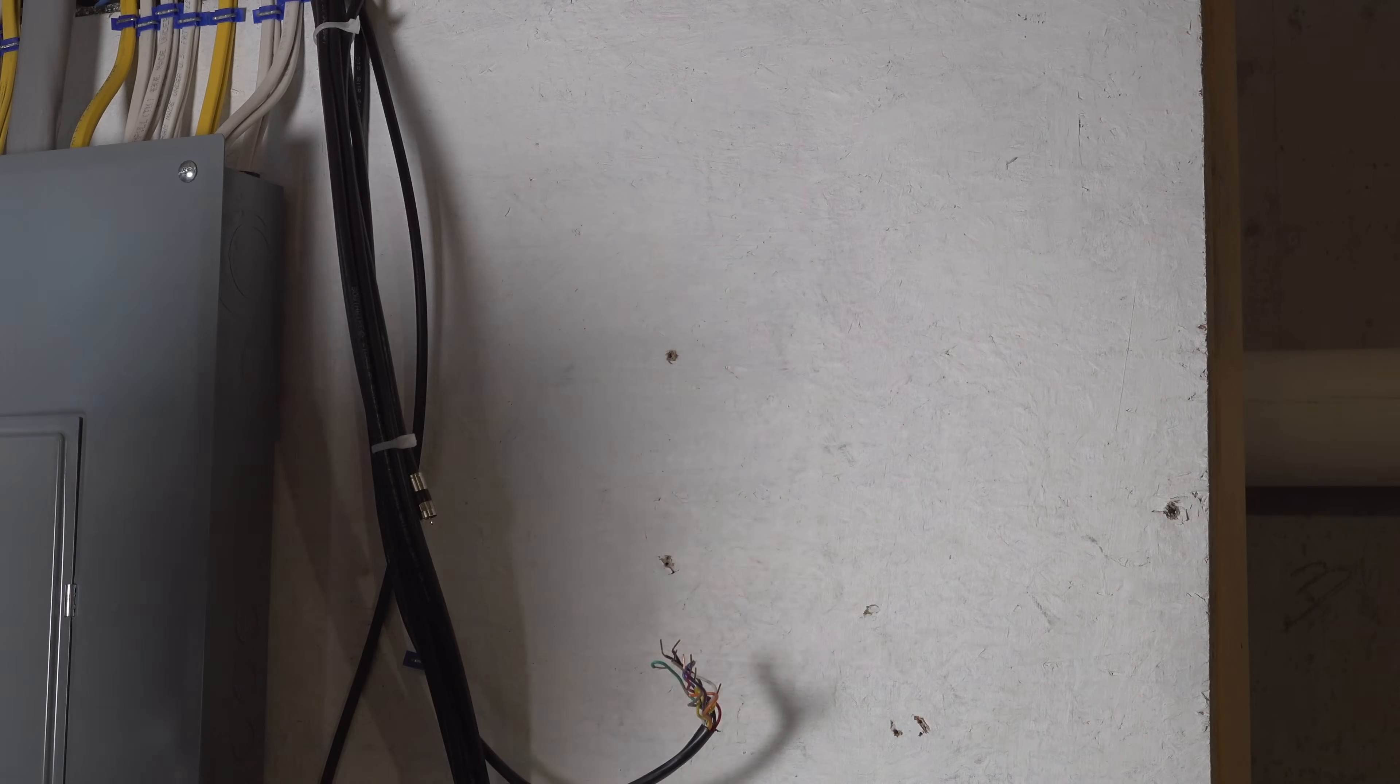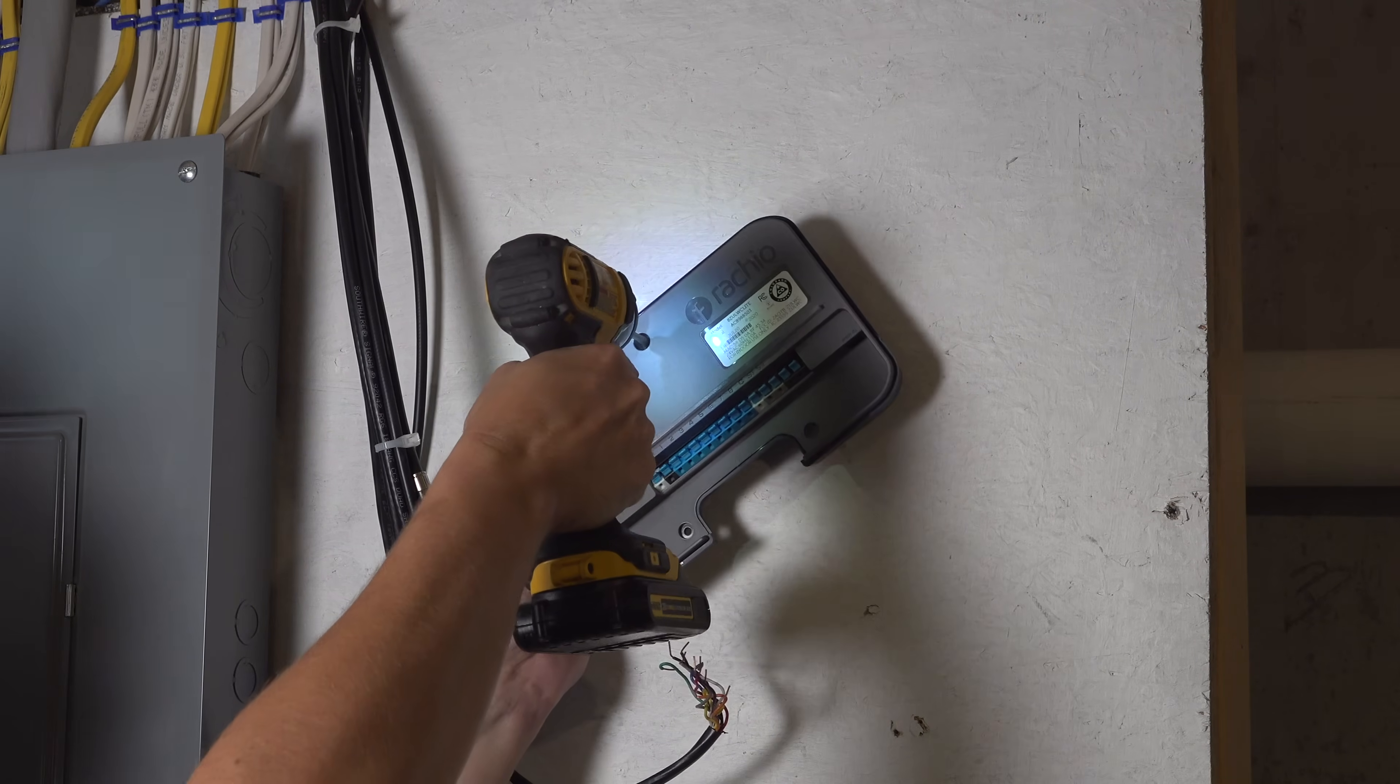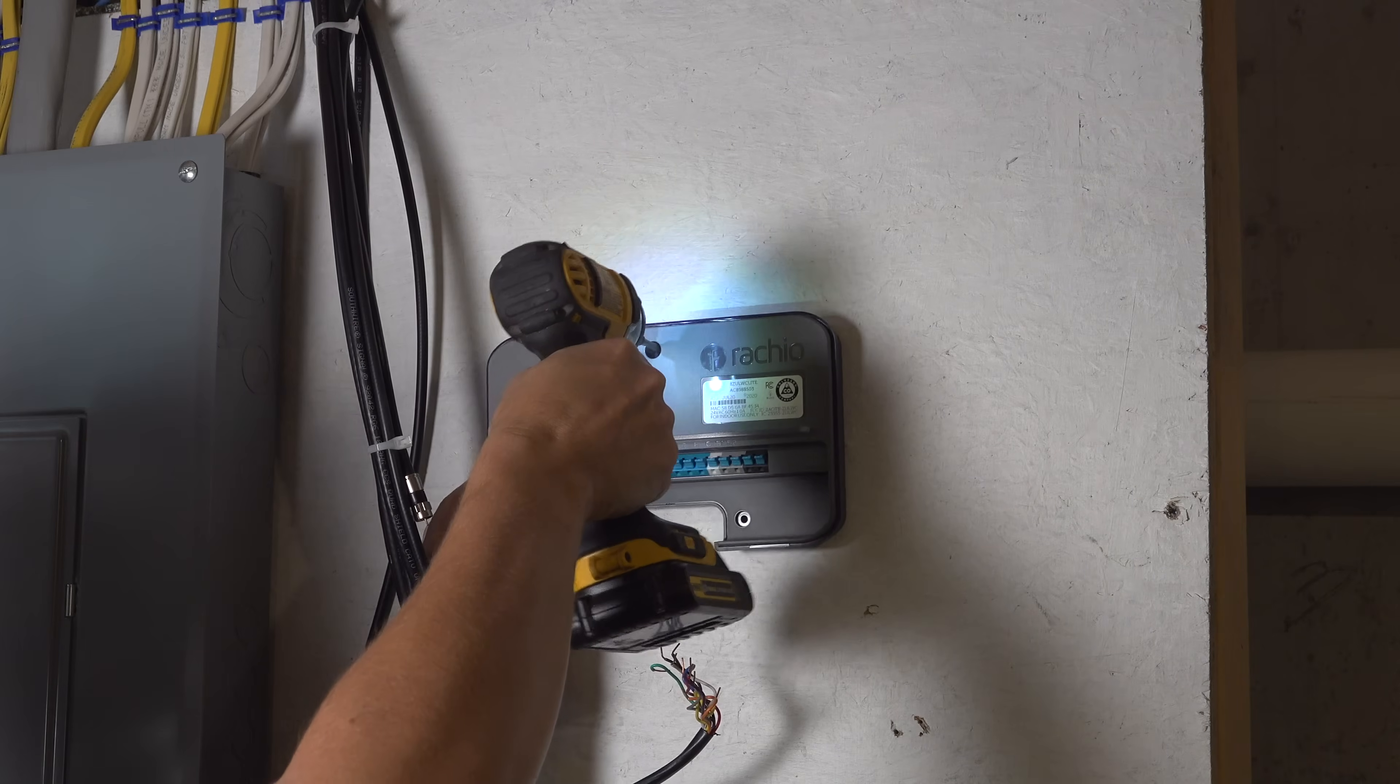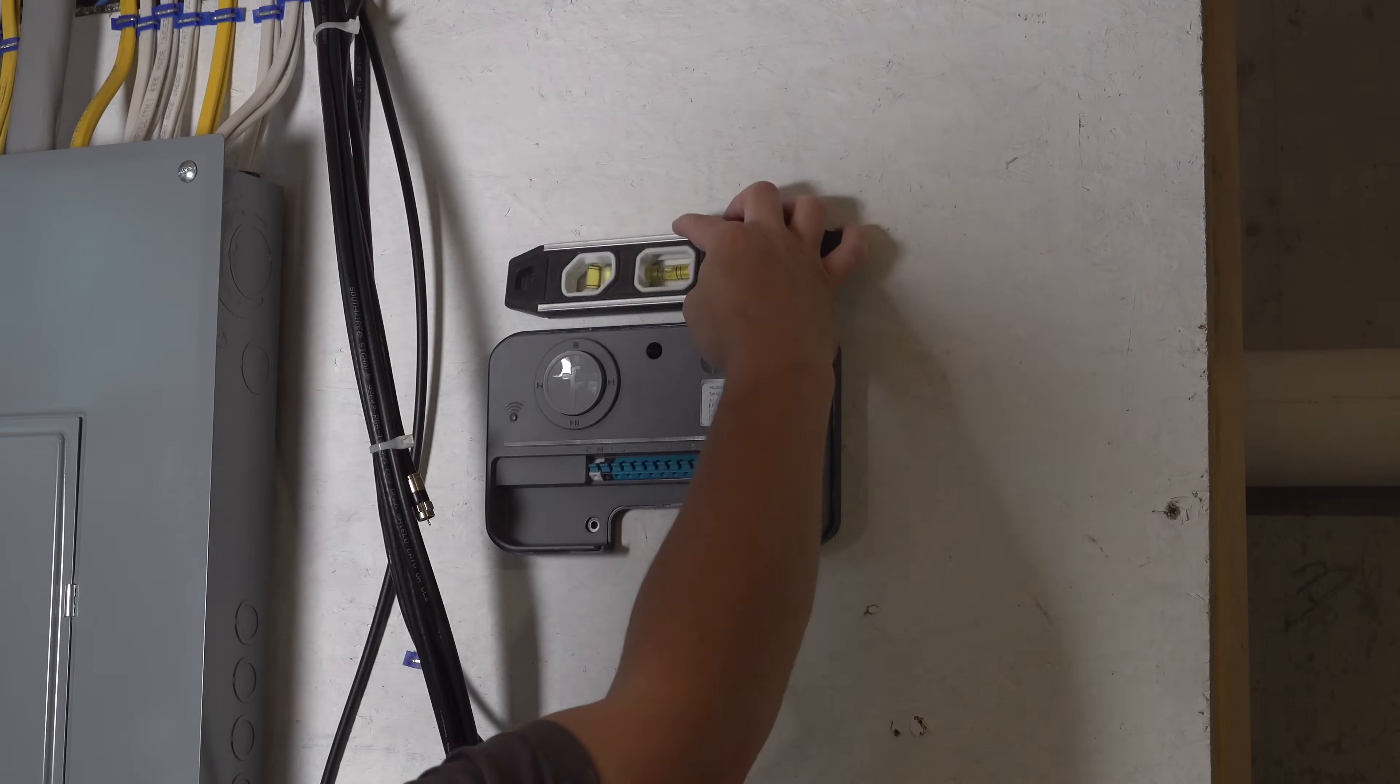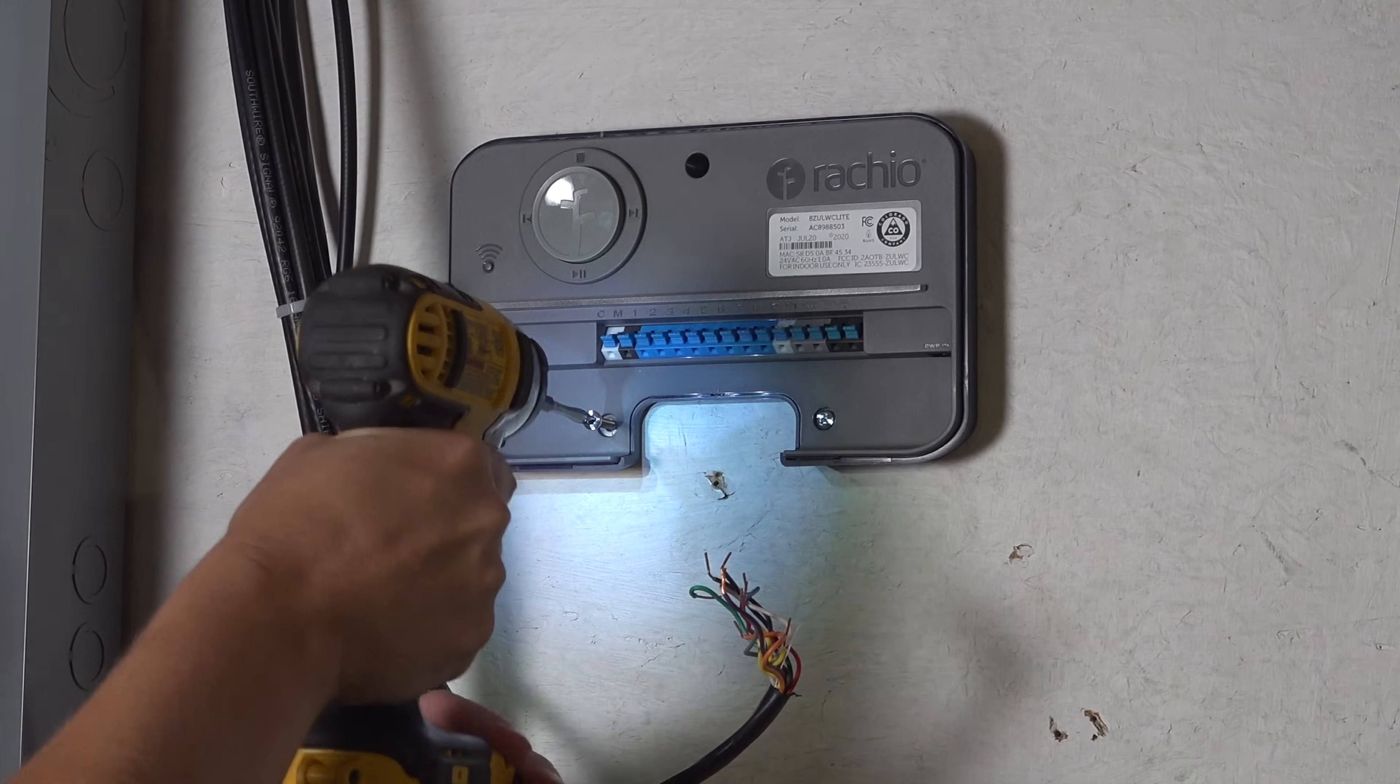Now we can start a new installation by putting our new controller on the wall. Rachio is really cleverly designed and that starts even with the mounting screws. You're going to take one of the included screws, put it into that top hole, level your unit, and then you can put the other two screws into the bottom holes.